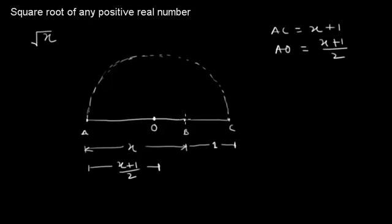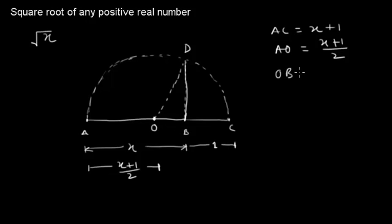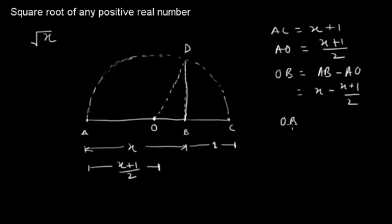Now we will draw one perpendicular line from point B. Here we have one right angle triangle, and this point is D. So here we can find out the length OB as well. OB is equal to AB minus AO, which is x minus (x + 1) / 2. By solving this we get OB = (x - 1) / 2.